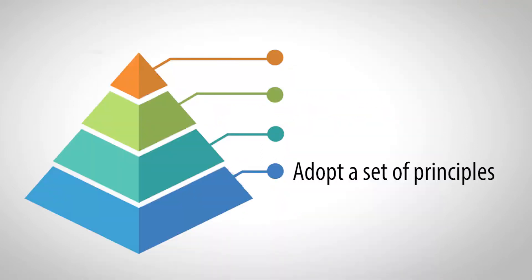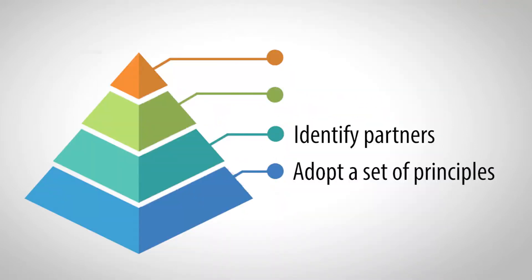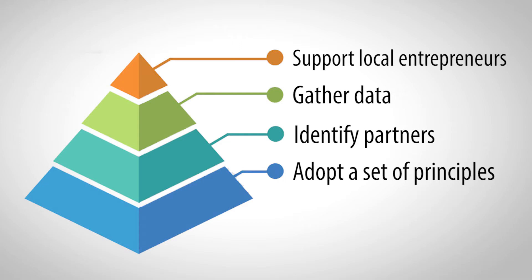The next step is all about identifying partners — start with the principles and then look for partners that make sense. Then it would be all about gathering real-time data, and we talk about ways that UNICEF has done that. Finally, it's about supporting local entrepreneurs, which has been a shift in strategy for UNICEF. Other organizations I've spoken with have also talked about the need to make sure we're acting locally in these innovation initiatives.